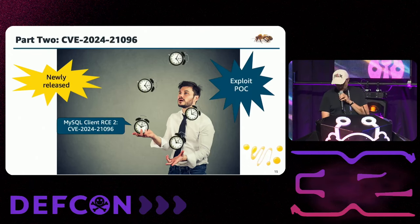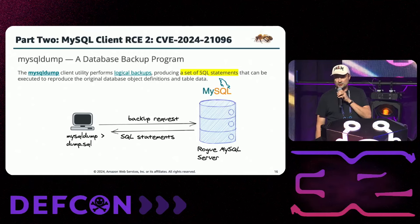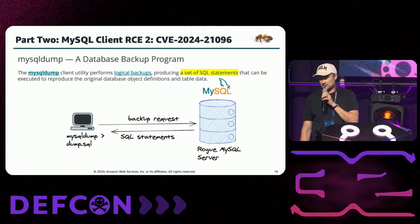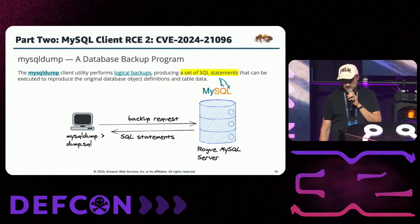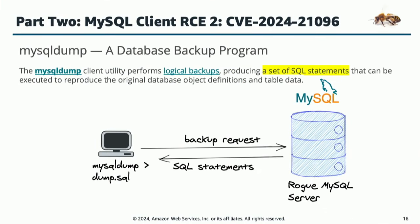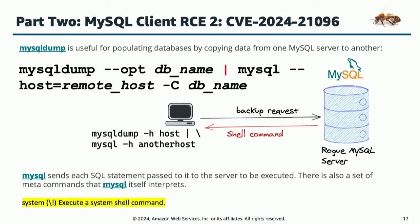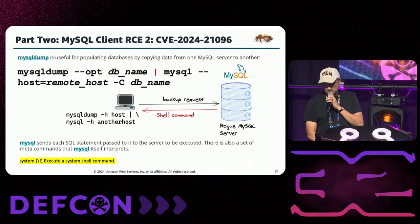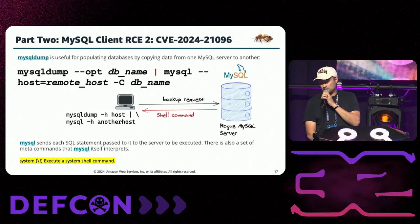Hi. Let's jump into this CVE. As you probably know, MySQL dump is a tool which allows you to produce logical backups of a database — basically scripting tables, other objects, and data to be transferred to another server. Here's an example of using MySQL dump together with MySQL: you pipe the output of MySQL dump to MySQL to recreate the database on another server, which is close to what the official documentation says. The problem: the MySQL utility allows you to use so-called meta commands. For example, backslash exclamation mark followed by a command will execute a shell command on the computer where the MySQL tool is running.